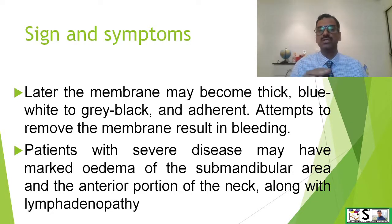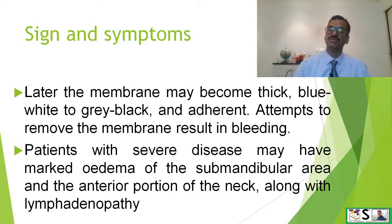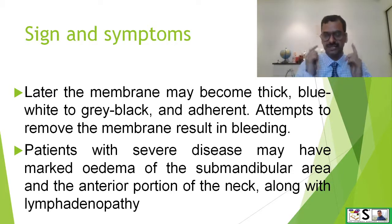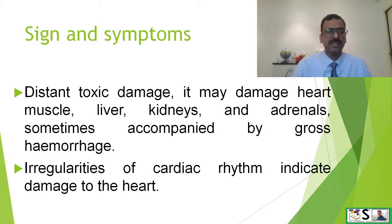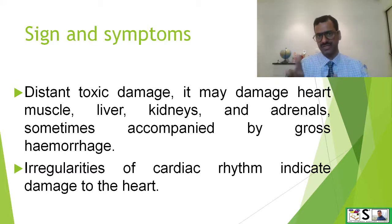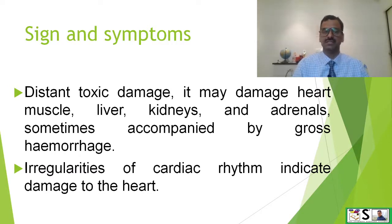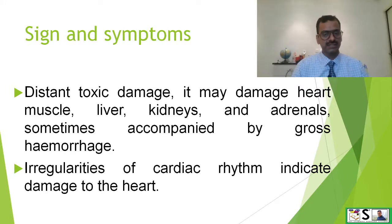Attempt to remove the membrane results in bleeding. Patients with severe disease may have marked edema of the submandibular area, ear, and anterior portion of the neck along with lymphadenopathy. Distant toxic damage may occur in severe cases, affecting heart muscles, liver, kidney, and adrenal glands, sometimes accompanied by gross hemorrhage and irregularity in cardiac rhythm, indicating damage to the heart.